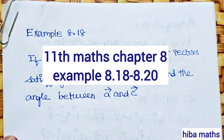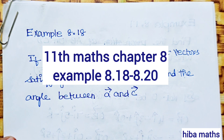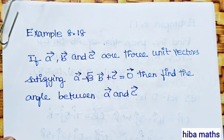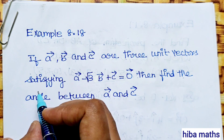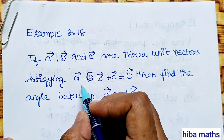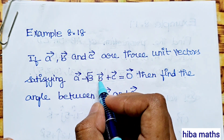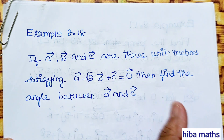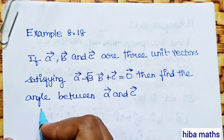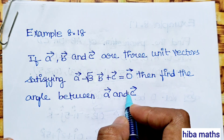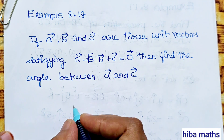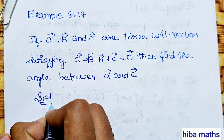Hello students, welcome to Heba Max 11th standard. Chapter 8, Vector Algebra, Example 8.18. If vector a, vector b, and vector c are 3 unit vectors satisfying a - √3b + c = 0 vector, find the angle between a and c.